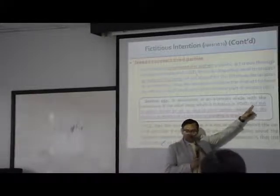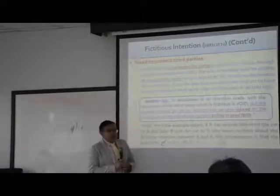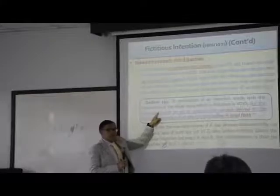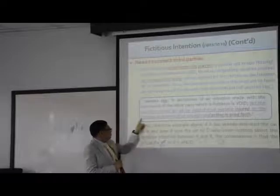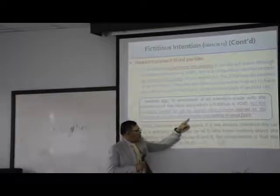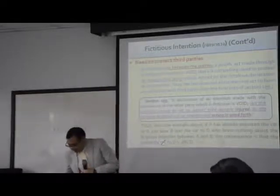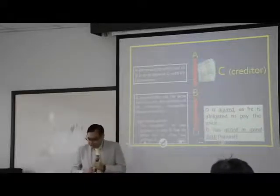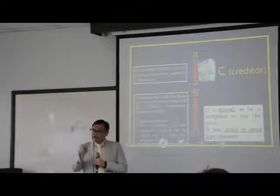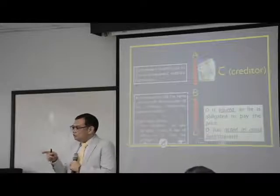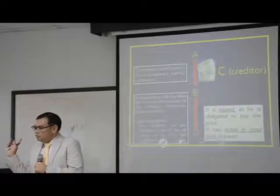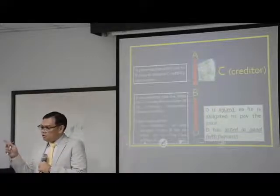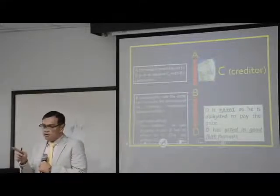If you go on to look at the second part of section 155, you can see that section 155 goes on to say: 'But this invalidity cannot be set up against third persons injured by the fictitious declaration of an intention and acting in good faith.' What does it mean? In this case, just now we have seen that the sale between A and B is void. When A pretends to sell this car to B in order to deceive C that the car belongs now to B, both A and B enter into conspiracy. So the consequence is that the contract between A and B is void, according to section 155.